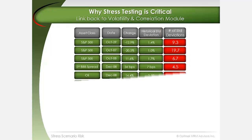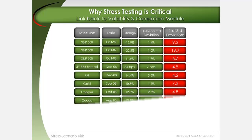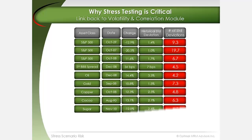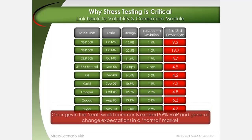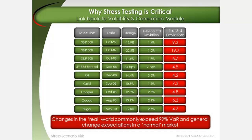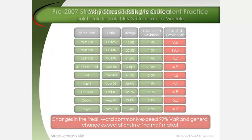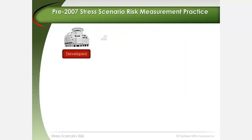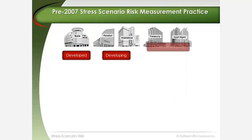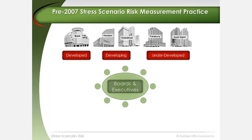Looking at similar events across different risk factors strongly suggests that risk factor changes tend to be distributed in a manner that is anything but normal in the real world. The sophistication of practice varies widely across organizations. The focus of senior executives and boards has largely been on developing an expression of risk appetite in a manner that has been disconnected from stress scenario risk measurement.